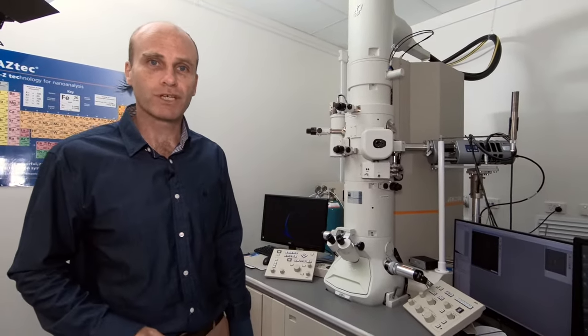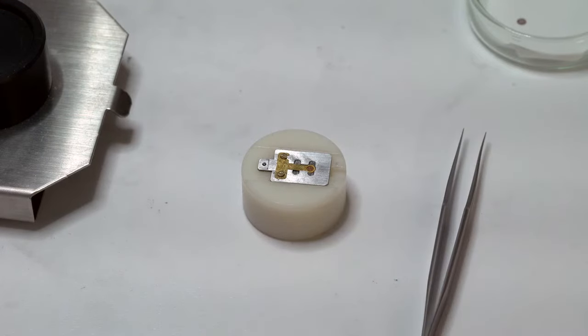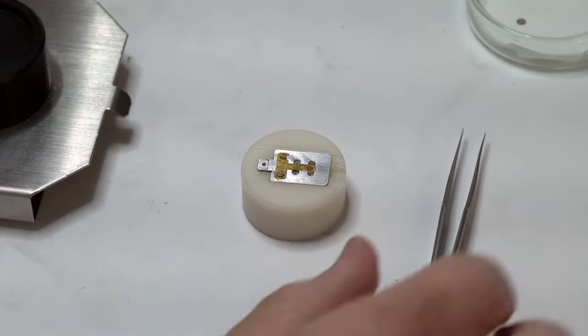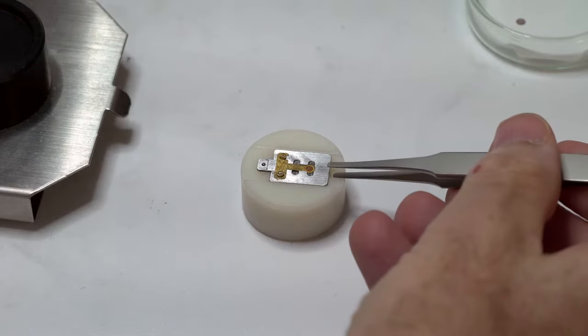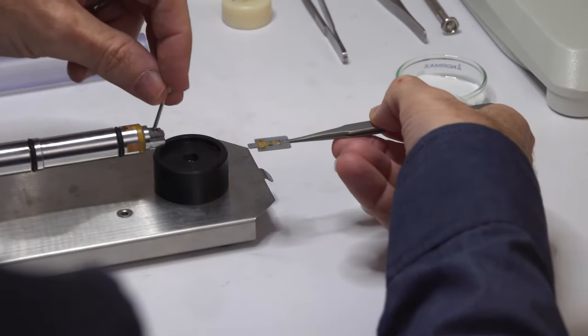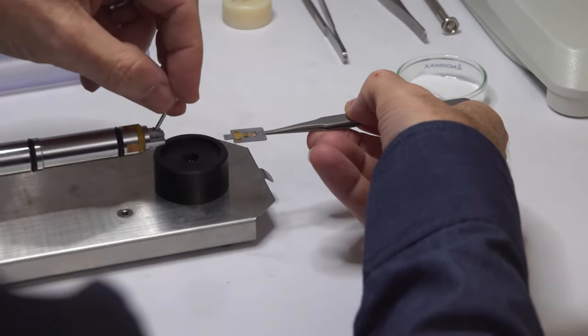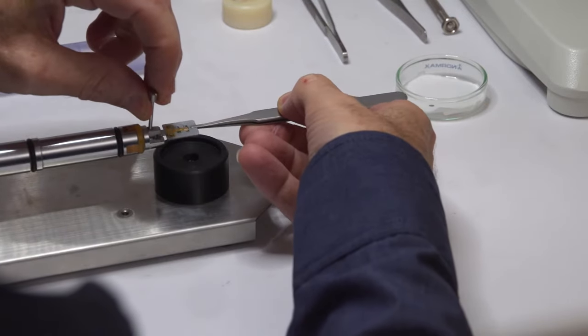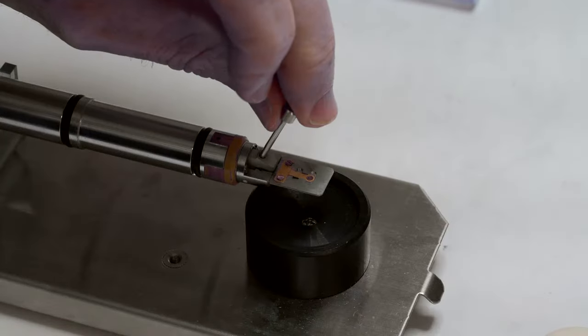But before we can do that, we're going to need to load our sample into the microscope. We've already applied it to the copper grid and we'll put the copper grid into the tip, the removable tip you can see here. And so now we'll load that onto our sample rod, thus. And now we can put that into the microscope.